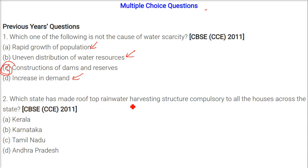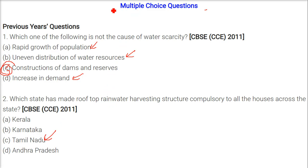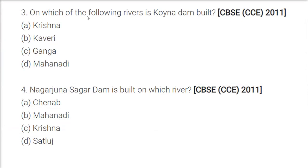Which state has made rooftop rainwater harvesting structures compulsory for all houses across the state? The answer is Tamil Nadu. They have a special state law, so if you are not making this, you can be prosecuted under the law — you can go to jail.